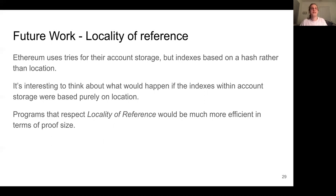However, the indices for the storage are indexed by hash rather than the location of the virtual data. So it would be interesting if the indices were based on the location, because then contracts that access nearby locations in the same call would be more efficient in proof size. And this makes sense, because many programs access memory in a local manner anyway. This all reflects the concept of locality of reference from processor design. And it would be nice to take the lessons from that field and apply them on the blockchain.